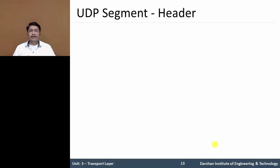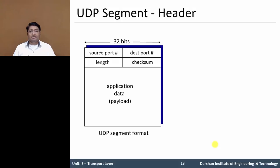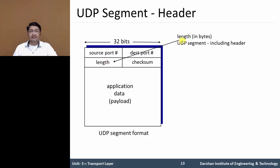Let's understand the segment header information. The total header size is 32 bits. The first field is source port number, the second is destination port number. Then there is the length in bytes of the UDP segment including the header, followed by the checksum field. The remaining portion is the actual application data, which will be passed to the correct application process based on the destination port number.